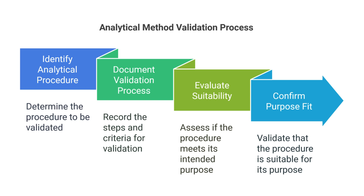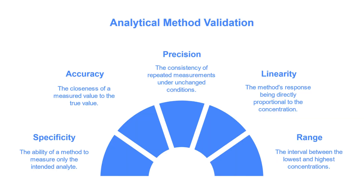Understanding analytical method validation. Analytical method validation is a documented process that confirms that an analytical procedure is suitable for its intended purpose. It involves several key parameters, including specificity, accuracy, precision, linearity, range, and robustness. Understanding these parameters is crucial for effective validation.